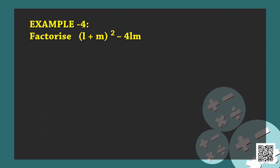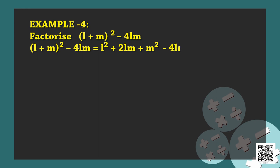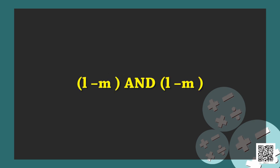Let us see one more interesting example. Example 4 – factorize (L plus M) whole squared minus 4LM. Using the first identity: (L plus M) squared minus 4LM equals L squared plus 2LM plus M squared minus 4LM, which equals L squared minus 2LM plus M squared. By the second identity, this equals (L minus M) whole squared. Hence, the factors are (L minus M) and (L minus M).